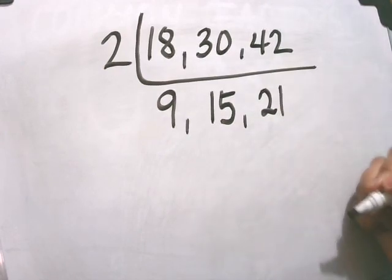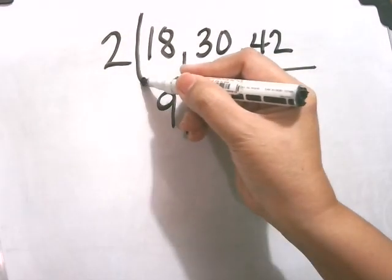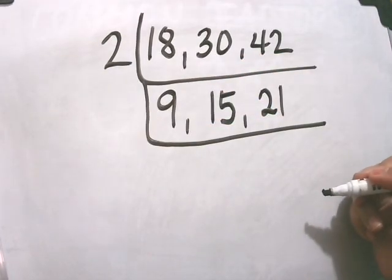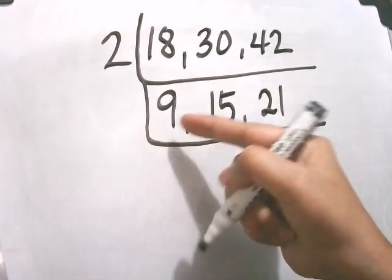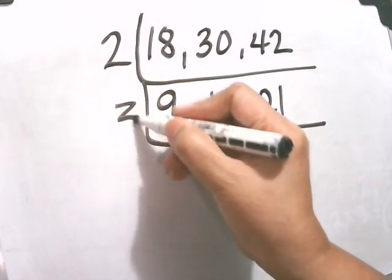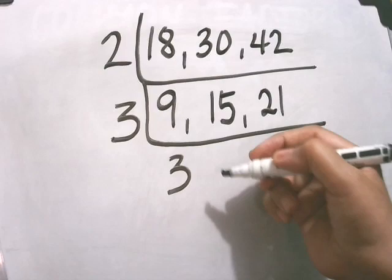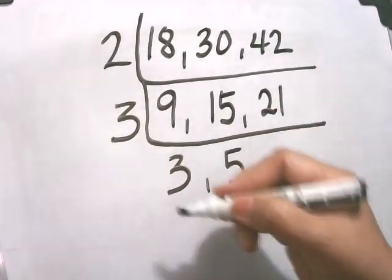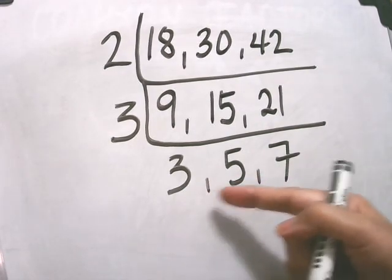So we still have three numbers that are divisible with prime factors. The prime number that could divide these three numbers is 3. 9 divided by 3 equals 3, 15 divided by 3 equals 5, 21 divided by 3 equals 7.